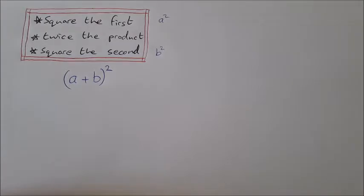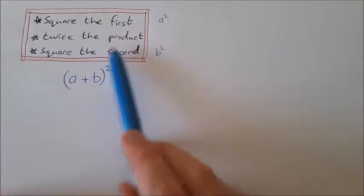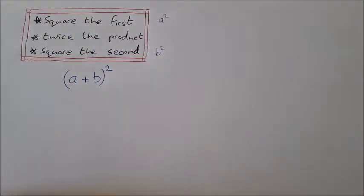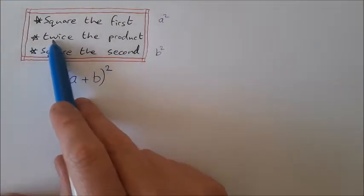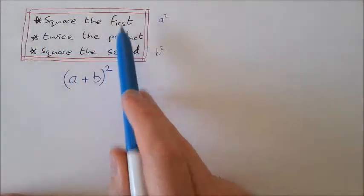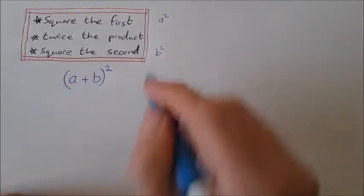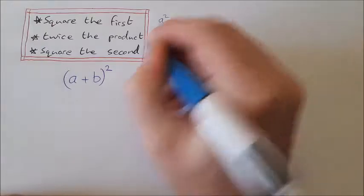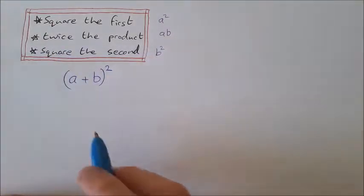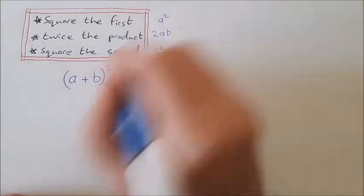Now a lot of people stop there, they actually forget this bit in the middle: twice the product. What does that mean? That means two times the product of the first and the second. So the product of the first and the second is ab, just a multiplied by b. Twice that is 2ab.